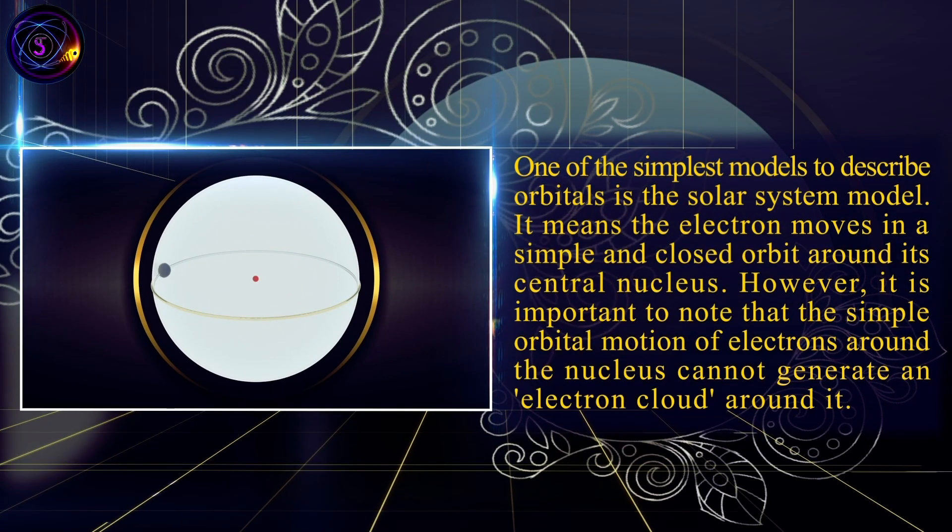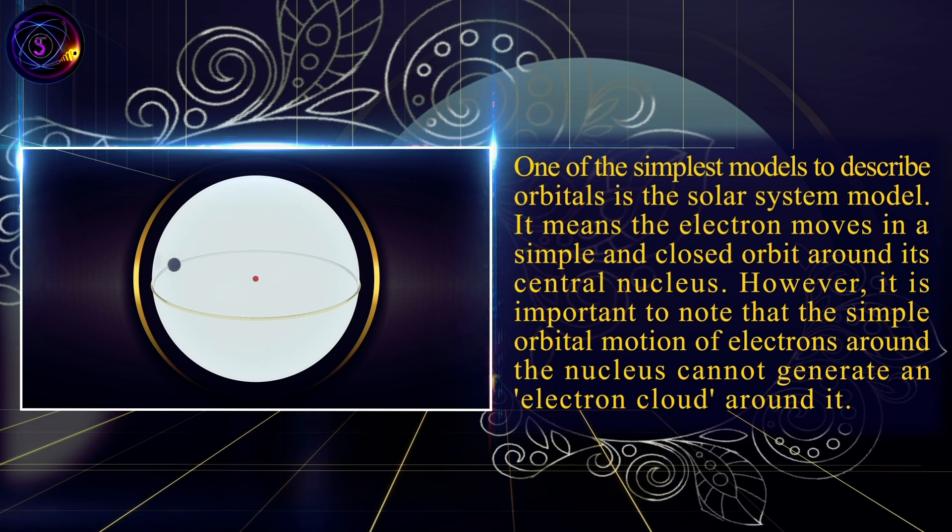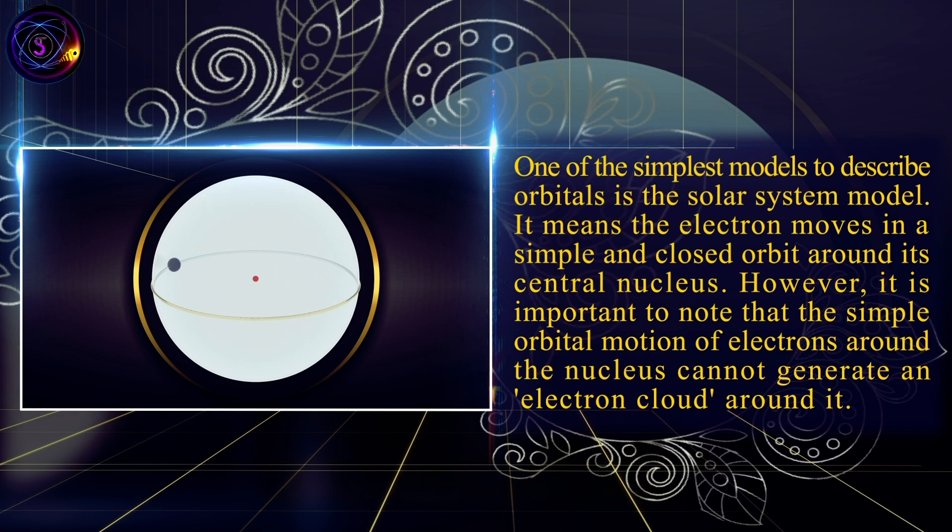One of the simplest models to describe orbitals is the solar system model. It means the electron moves in a simple and closed orbit around its central nucleus. However, it is important to note that the simple orbital motion of electrons around the nucleus cannot generate an electron cloud around it.